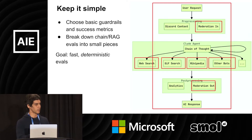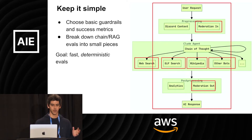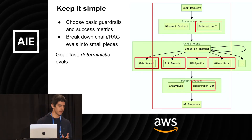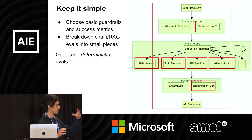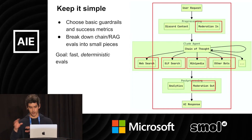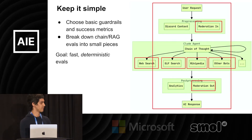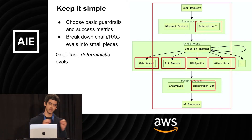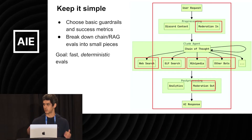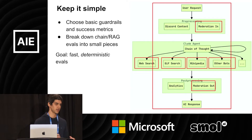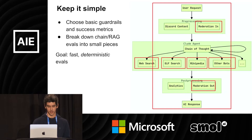My brief advice for evals is: keep it simple. There are a lot of people peddling fancy eval metrics and fancy guardrails. The way to think about it is to treat them as unit tests. Figure out the specific parts of your system — in this architecture, you might have an eval for moderation specifically or each of the specific tool usages. Maybe at the end of the day, one big end-to-end eval. But most evals are for specific steps. Break it down into really small pieces. The goal is fast, tiny evals that are ideally deterministic.